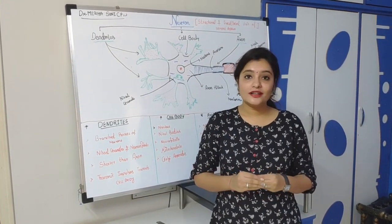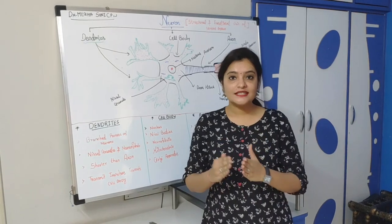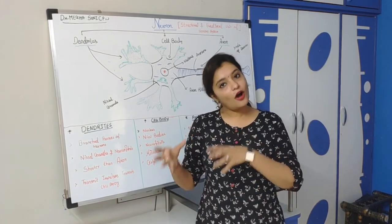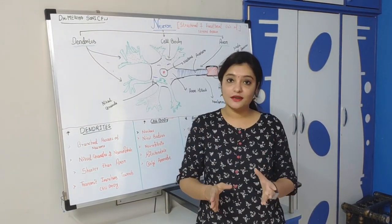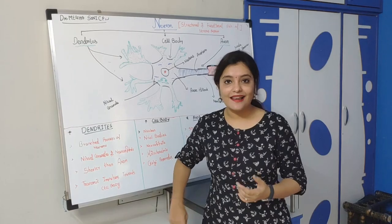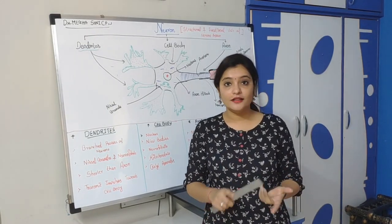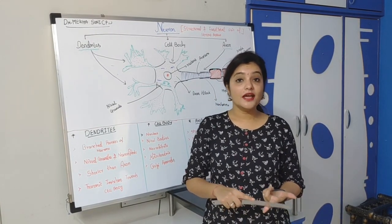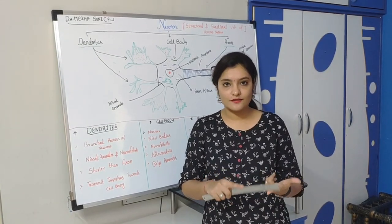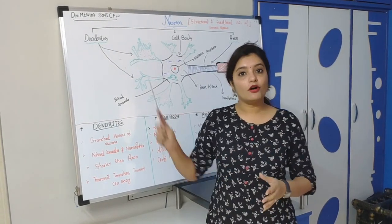Now what is neuron? Neuron is a basic cell. Our body is made up of cells. More than one cell forms the tissues, more than one tissue forms the organs, and more than one organ forms the system. So basically our whole body is made up of cells. Neuron is the cell which forms the whole nervous system. The nervous system is divided into two parts: the central nervous system and the peripheral nervous system. The central nervous system consists of brain and spinal cord, and the peripheral nervous system consists of somatic nervous system and autonomic nervous system. So all these systems are made up of neuron.